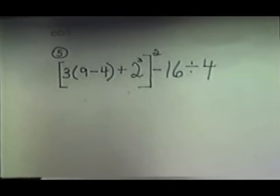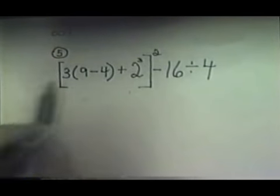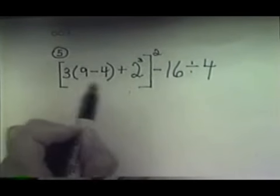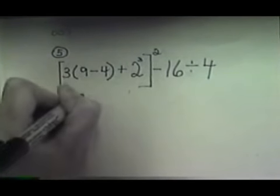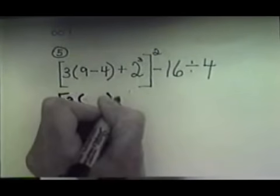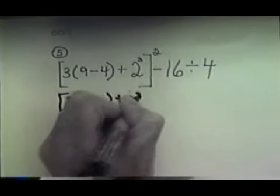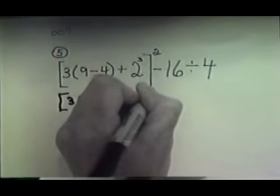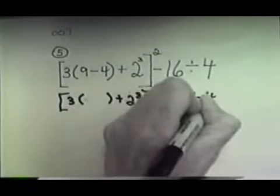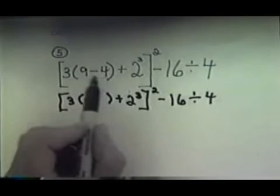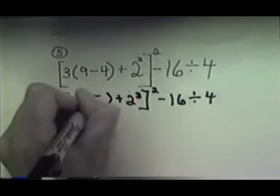Now, our rule says to work with the grouping symbols first and to work from the inside out. So what that means is we go as far in the grouping symbols as we can, which means we go to this 9 minus 4, and we do that first. So I'm going to copy the problem down and try to make it look just like it did before. But all I'm going to do is what's inside this parenthesis. So I'm going to do the 9 minus 4 and get 5.